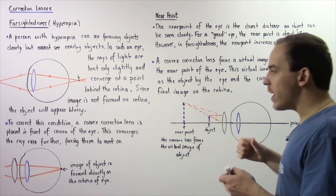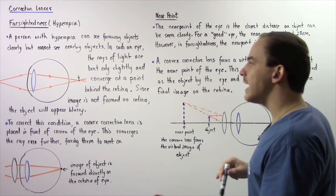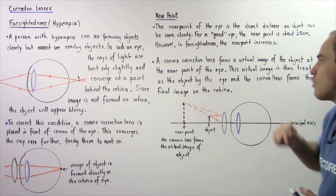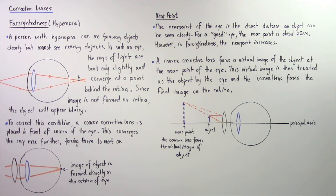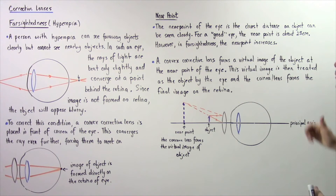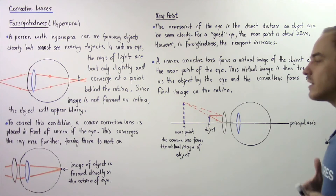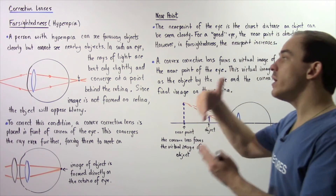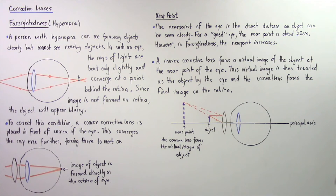When we place a convex corrective lens next to the eye, it forms a virtual image of the nearby object exactly at the near point of the eye. This virtual image formed by the convex corrective lens is then treated as the object by the eye. The cornea-lens system then forms the final image of this virtual object exactly on the retina of the eye. That is why a person with hyperopia wearing convex glasses can see nearby objects clearly.